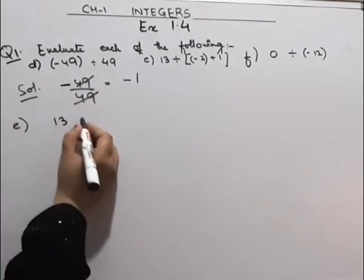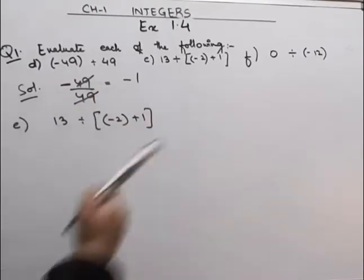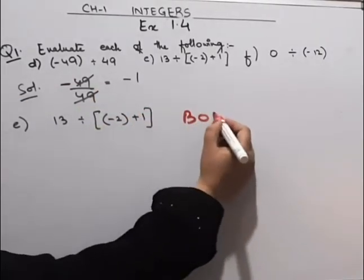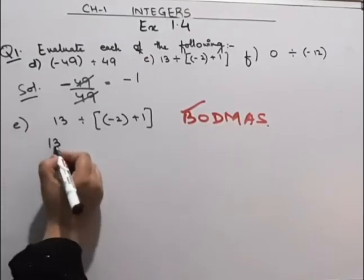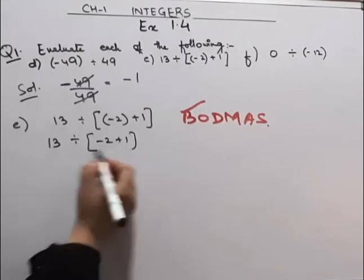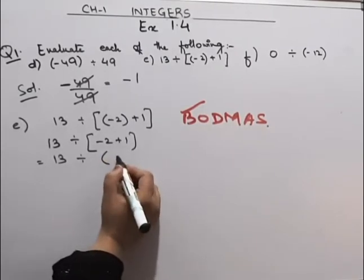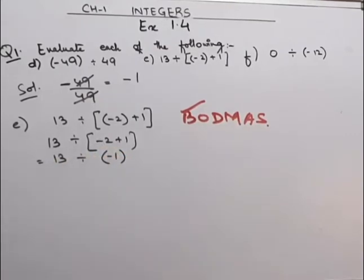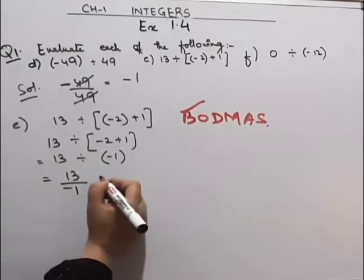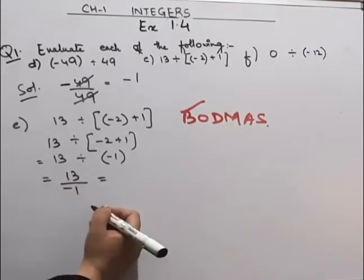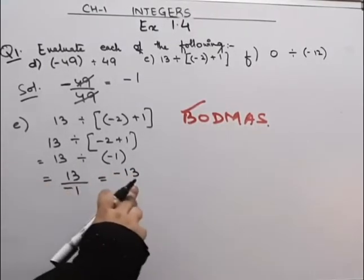Now coming to the E part. E part is 13 divided by minus 2 plus 1. We'll apply BODMAS rule to it. First we'll solve the bracket. We'll write it as 13 divided by minus 2 plus 1. Minus 2 plus 1 means 2 minus 1 is 1. Sign will be minus, because 2 has a greater value and 2 has minus. So it will be minus 1. Now 13 divided by minus 1. Any number when divided by 1 gives the number itself. The minus sign we'll get here. So the answer for the E part will be minus 13.